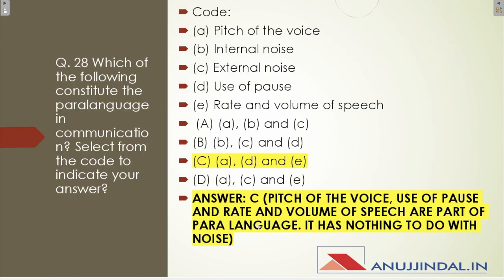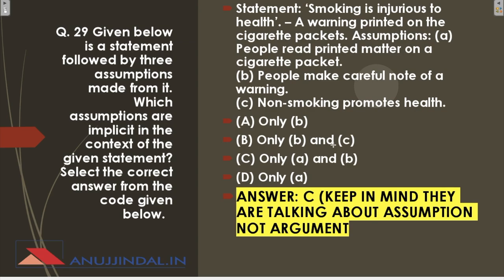Question twenty-eight asks which parts constitute paralanguage in communication. This is a very direct question. Internal noise and external noise cannot be part of paralanguage, so those are eliminated first. The three remaining parts are: pitch of the voice, use of pause, and rate and volume of speech.